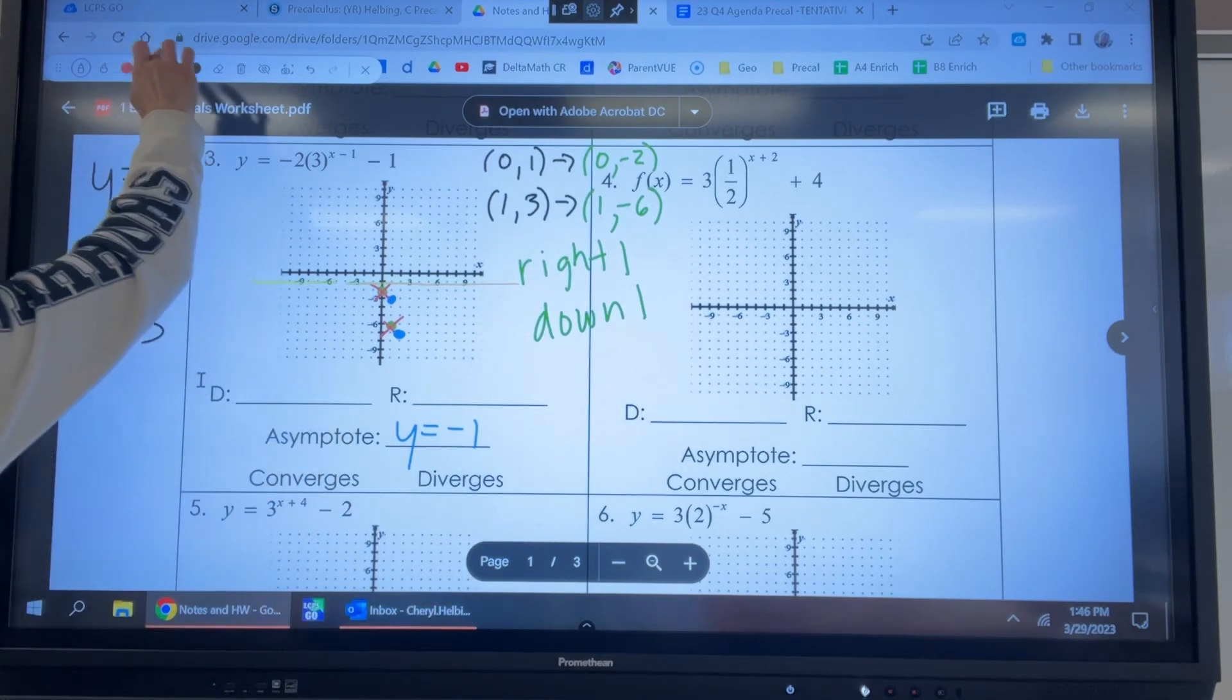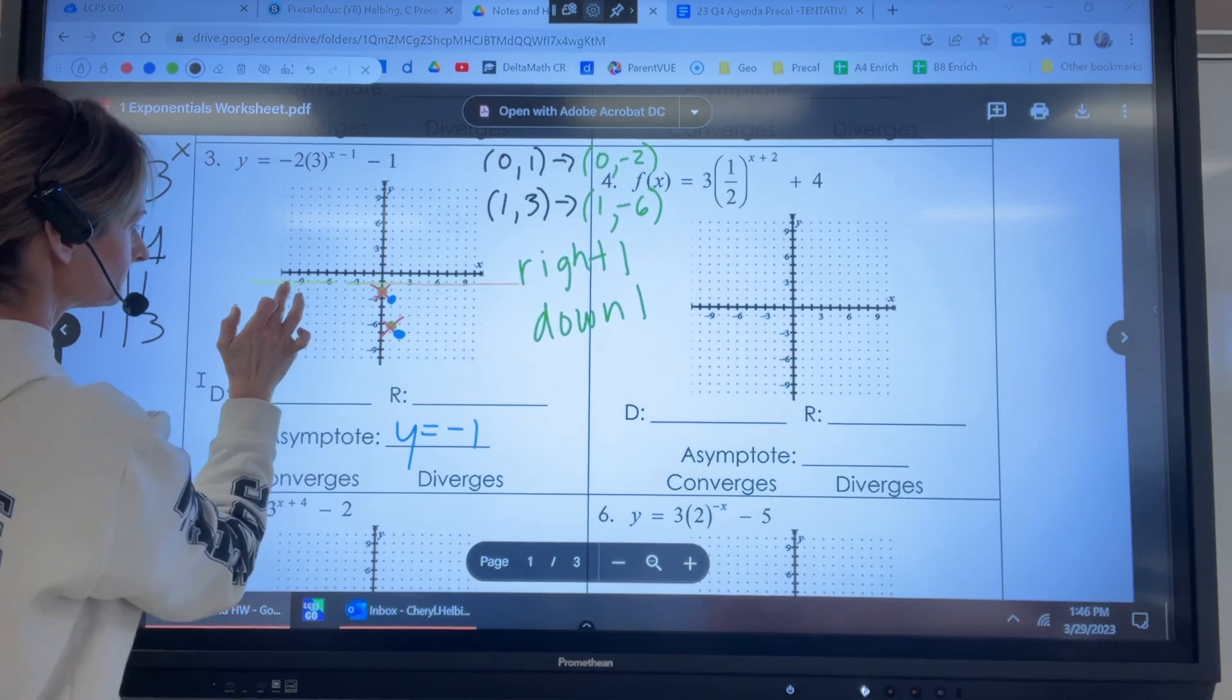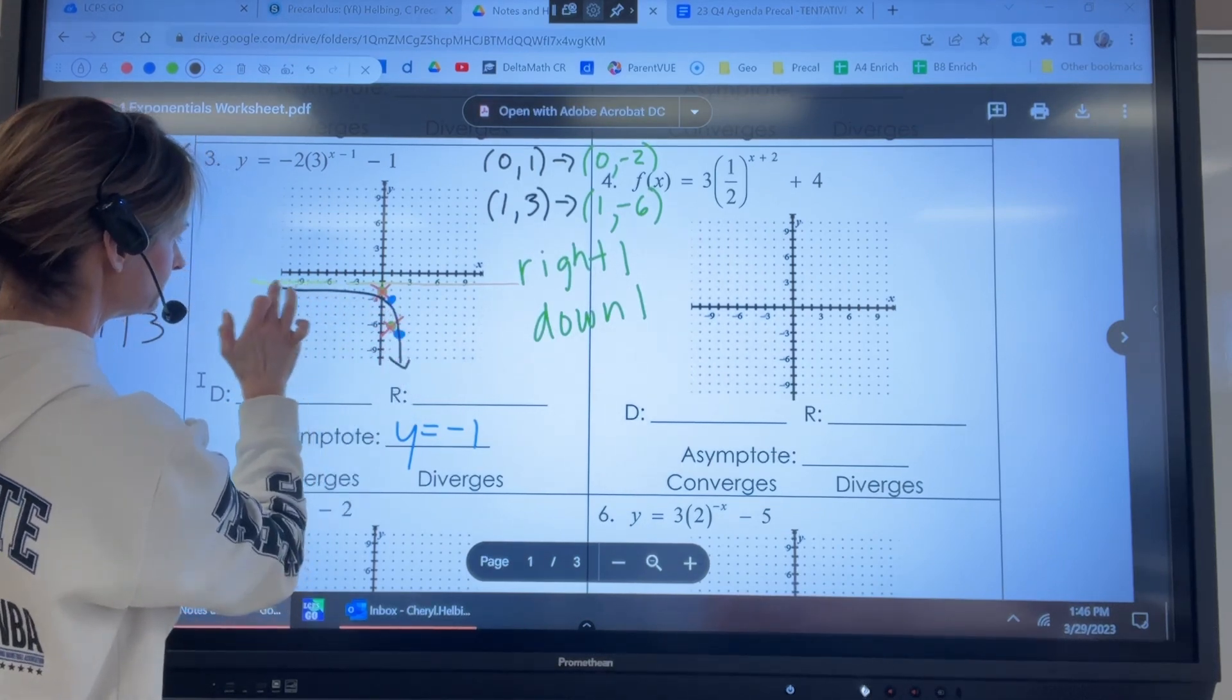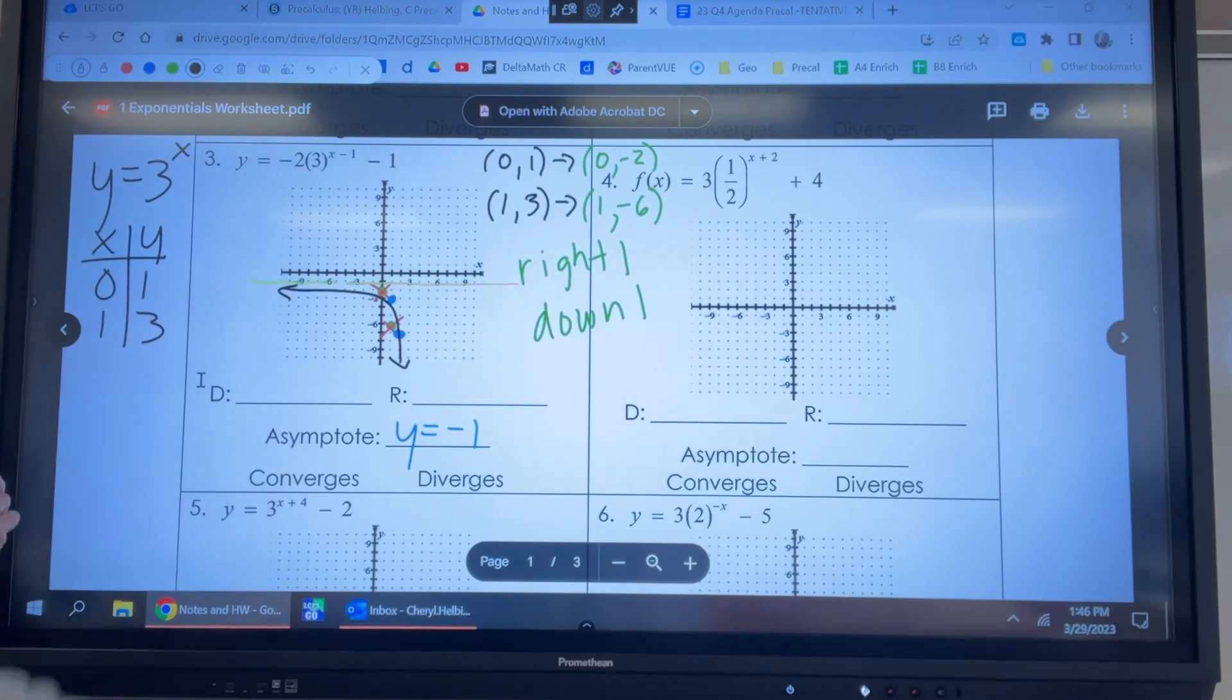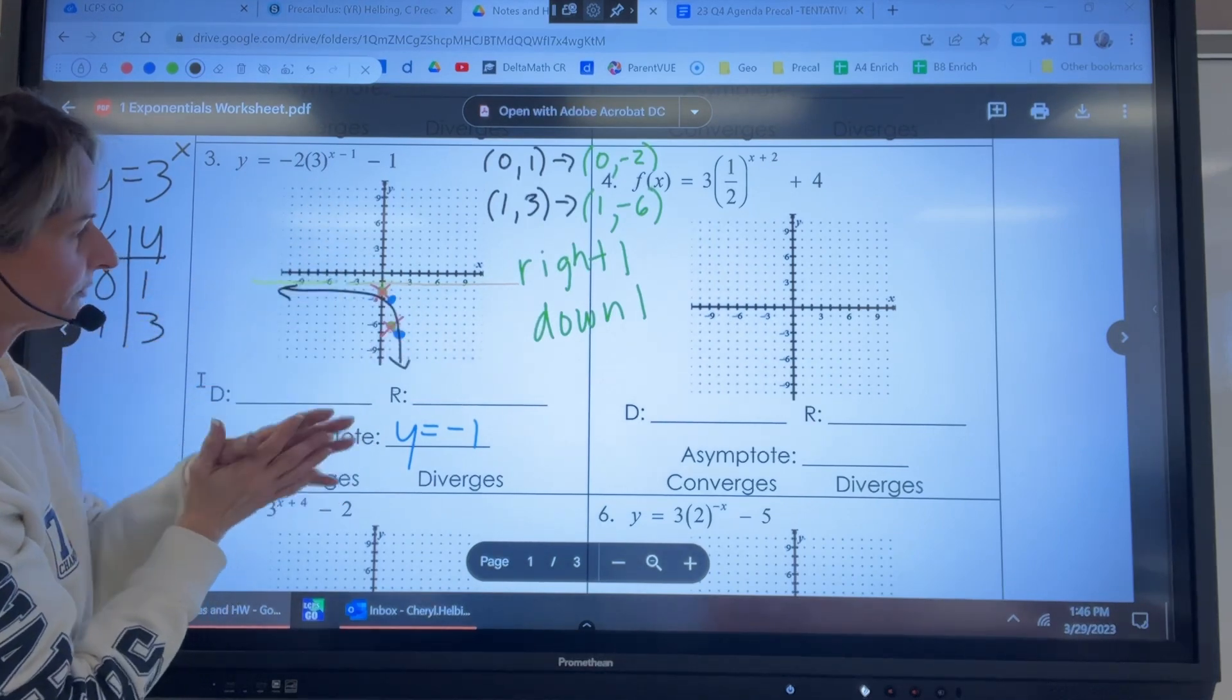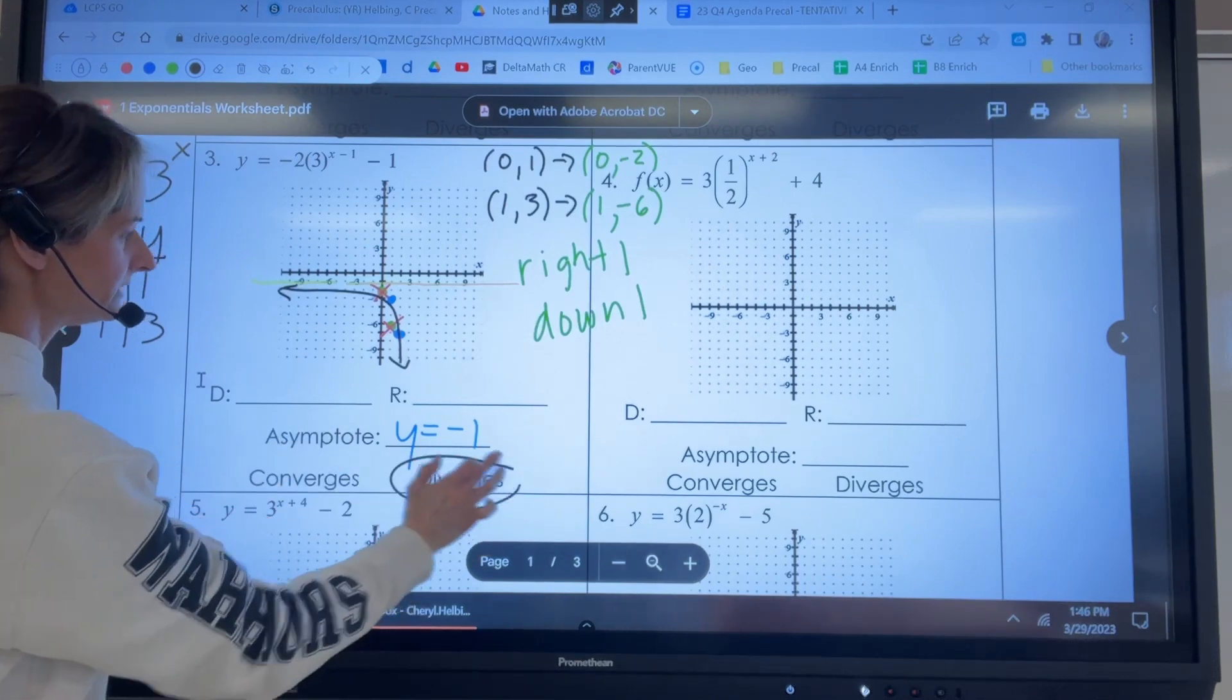That graph is still, as the x values are going up, the y values are not approaching the graph. So this is still diverging.